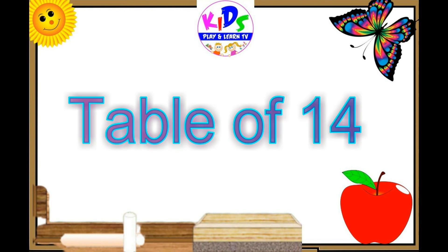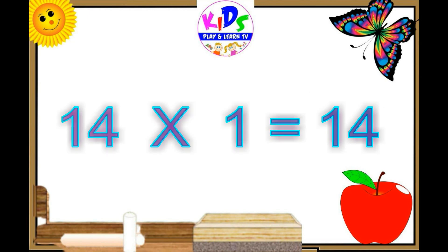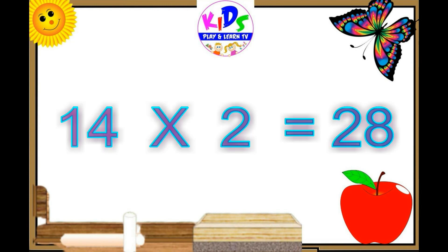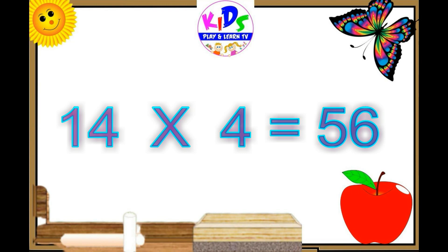Hello friends, let's learn the table of 14. 14 ones are 14, 14 twos are 28, 14 threes are 42, 14 fours are 56.